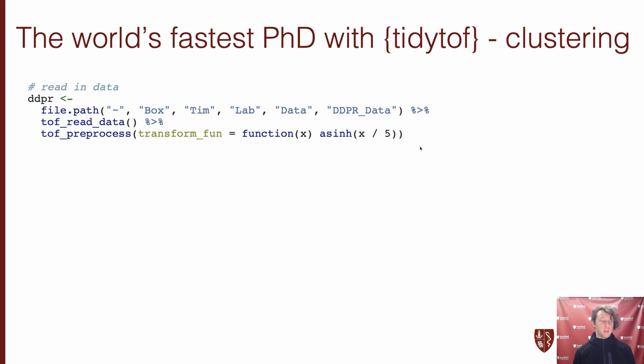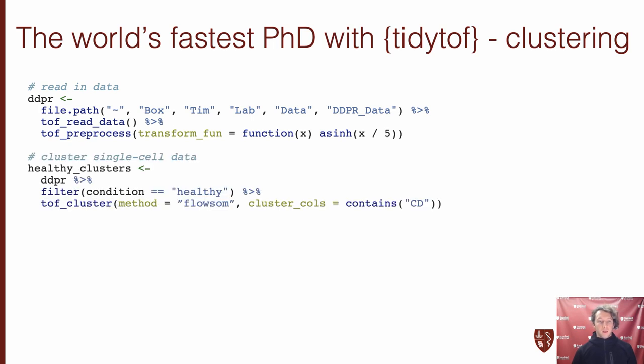Here, I've actually written out explicitly the default, which is the arc sinh transformation, a well-characterized variance stabilizing transformation in the CyTOF community. Next, we can actually perform the first step of the DEEPER algorithm by identifying the main types of healthy bone marrow cells that we have in our healthy cohort. So I do that here first by piping in our pre-processed tibble from the previous step into the dplyr function to filter just the healthy cells. And then from there we can pipe that into the TOF cluster verb, which applies the FlowSOM clustering algorithm to all of the healthy cells. And that's just one of five clustering algorithms that have their native support in TidyTOF.